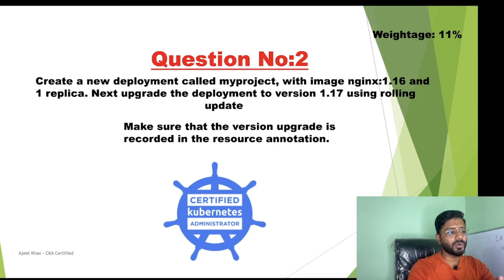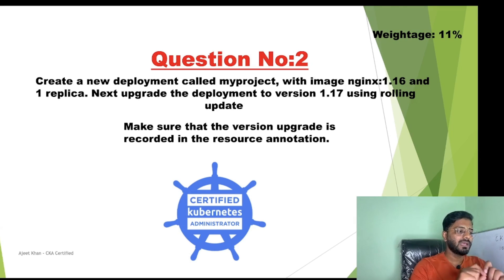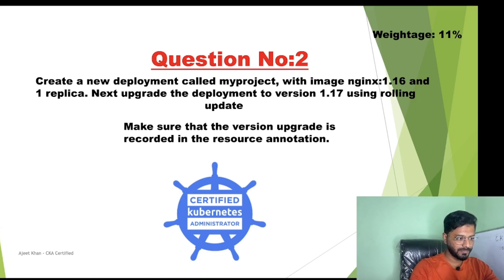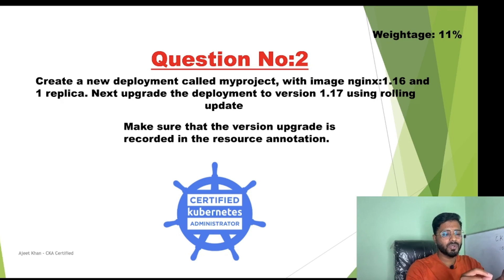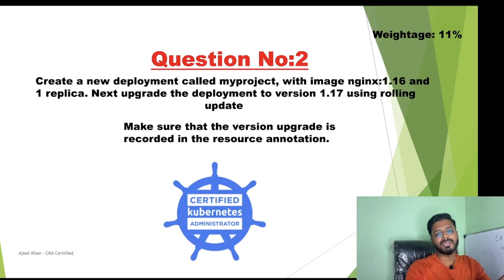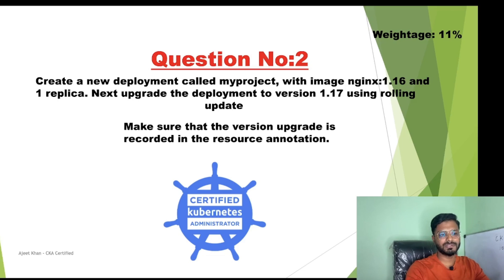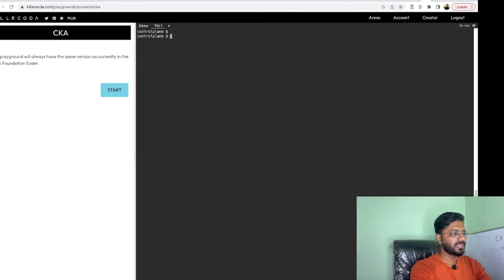The next question is: create a new deployment called my-project with image nginx:1.16, it should have one replica, then upgrade the deployment to nginx 1.17 with a rolling update, and make sure the version upgrade is recorded in the resource annotation. We need to use kubectl create command, name the deployment my-project, and use image nginx:1.16. Once done, we upgrade it to 1.17 and record the update to see the history.